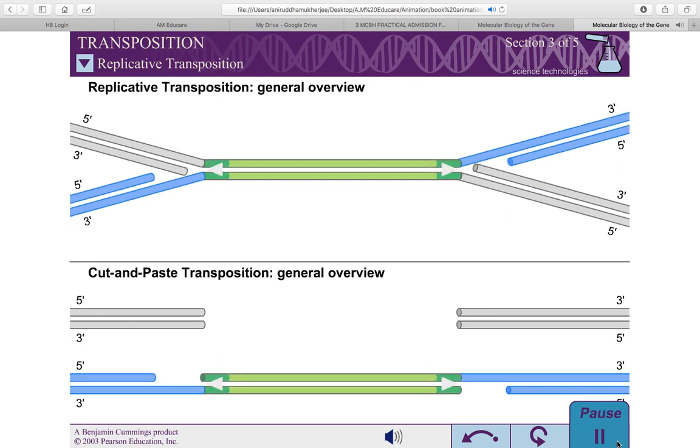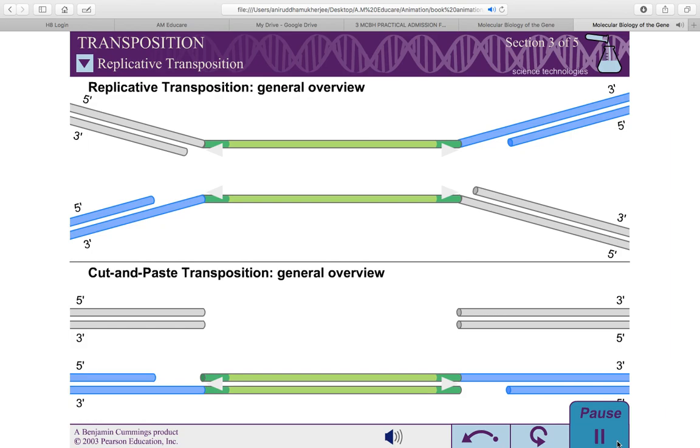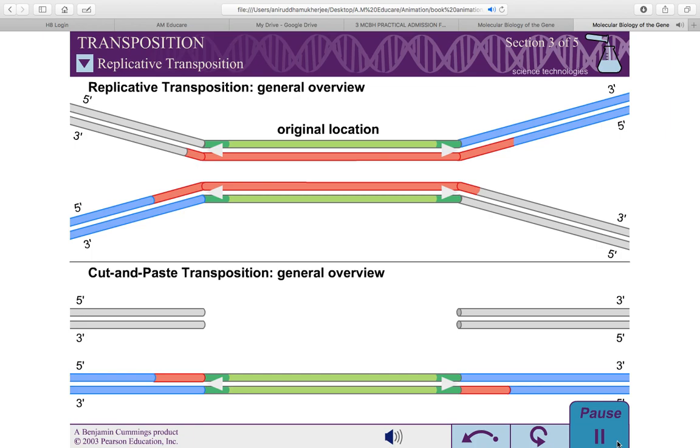However, the transposon DNA is duplicated during transposition, leading to two copies of the transposon joined to the new and old DNA target sites.